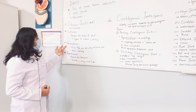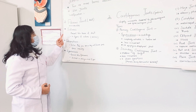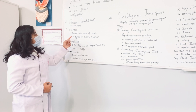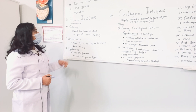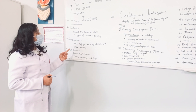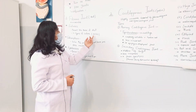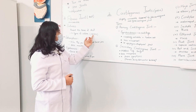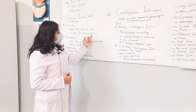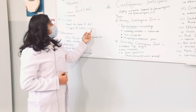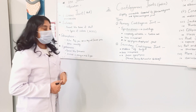The three types of fibrous joints are: sutures, gomphosis, and syndesmosis. Sutures are present between bones of the skull. There are four types of sutures, easily remembered as MSCL: metopic suture, sagittal suture, coronal suture, and lambdoid suture.